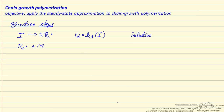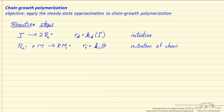Once we have this active species, it can react with a monomer. The monomers are present in high concentration relative to the concentration of the active center. We can start the process of initiating the chain. The rate of initiation is the rate constant for initiation, the concentration of these active centers, and the concentration of the monomer.